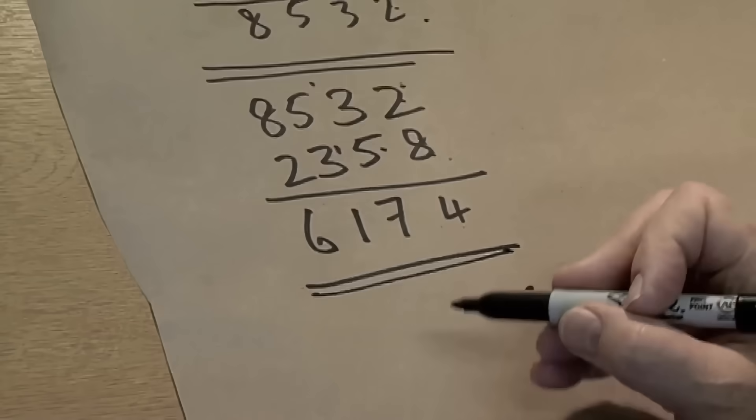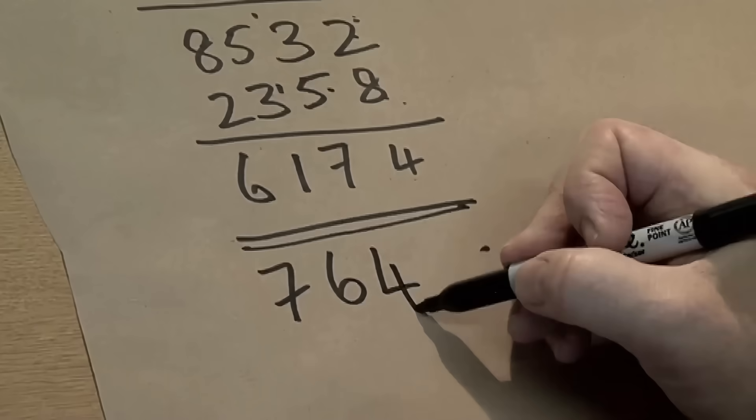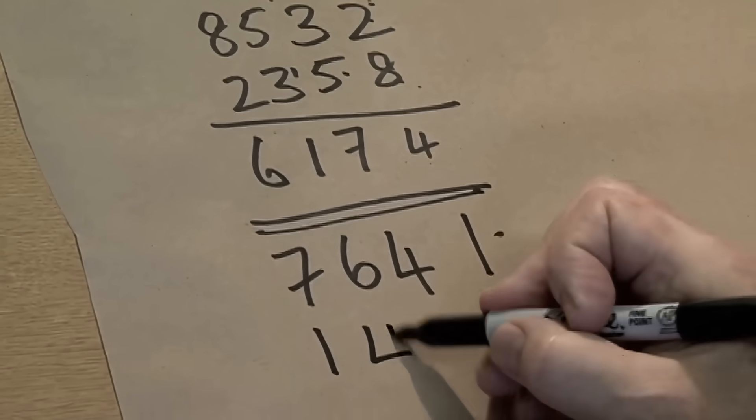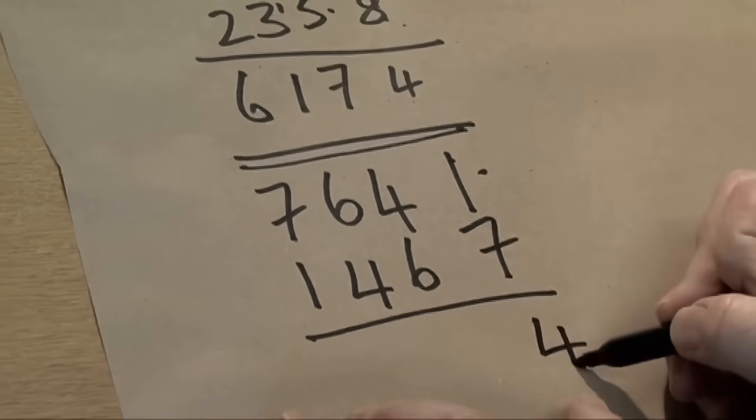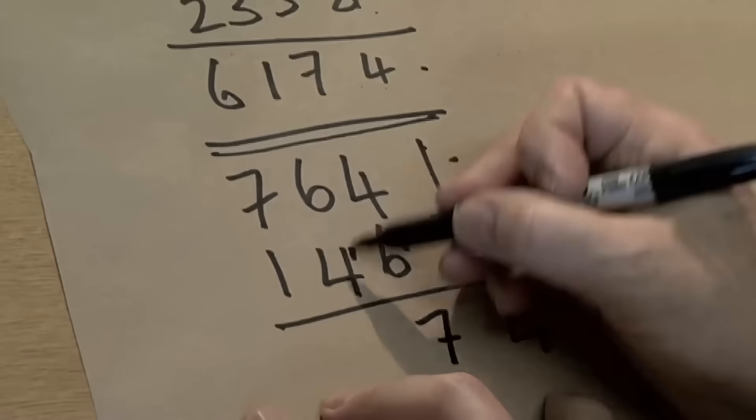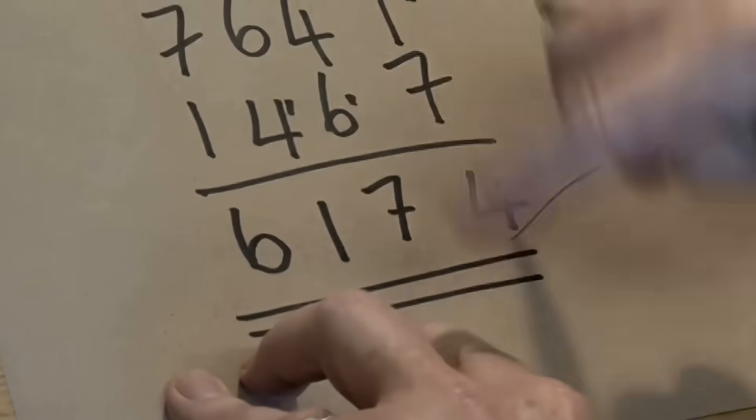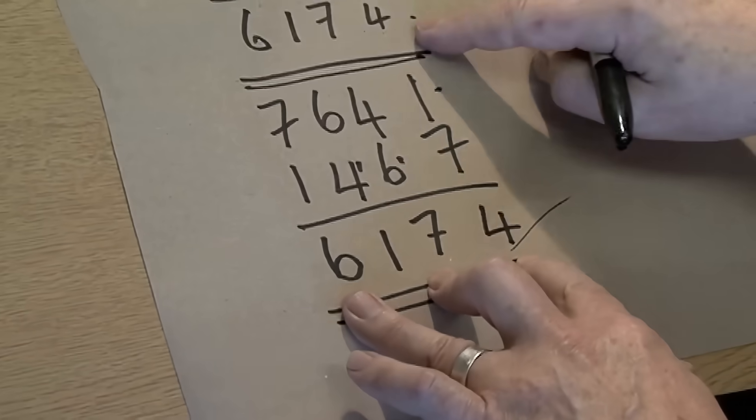Well, if I got to this number and I do it again, I would have 7641 and then 1467. And I take this away from that and I get back to 6174. And if I were to do that again, I would get this and then that and it would go on forever. The whole thing with this procedure always converges, always ends up with this number. And when it's got to this number, it's stuck in a perpetual loop.